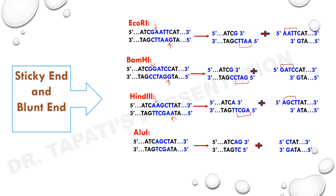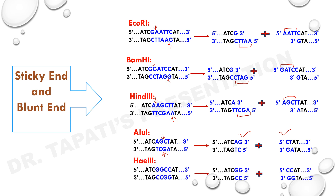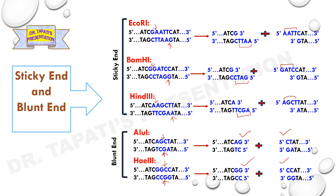One example of a blunt-end-forming enzyme is AluI, which recognizes AGCT and makes a simple cut within the AGCT sequence, producing two blunt ends. HaeIII recognizes GGCC, cuts within the GGCC sequence, and also produces two blunt ends. So EcoRI, BamHI, and HindIII produce sticky ends, whereas AluI and HaeIII produce blunt ends.